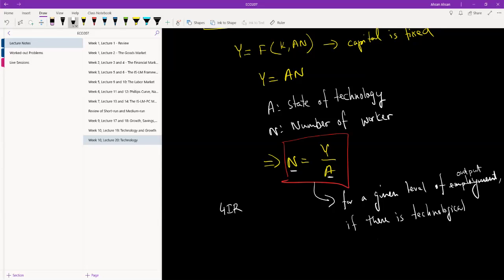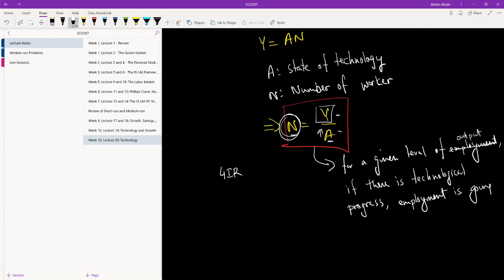Look at what it means here. For a given level of output, in an economy obviously there's a fixed number of work available. We can't just indefinitely keep hiring people. So for a given level of output, if there is technological progress, notice what's happened. We have a given level of output. Technology has gone up. If the numerator stays fixed and the denominator goes up, employment is going to fall.